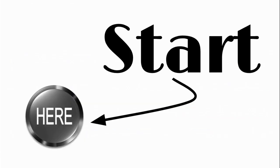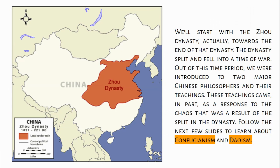In this slideshow you can click around and go at your own pace. Let's start with the Zhou dynasty — we'll actually start towards the end of the Zhou dynasty. The dynasty split and fell into a time of war. Out of this time period we were introduced to two major Chinese philosophers and their teachings, which came in part as a response to all this chaos. In the next couple slides I'm going to talk about Confucianism and Taoism.